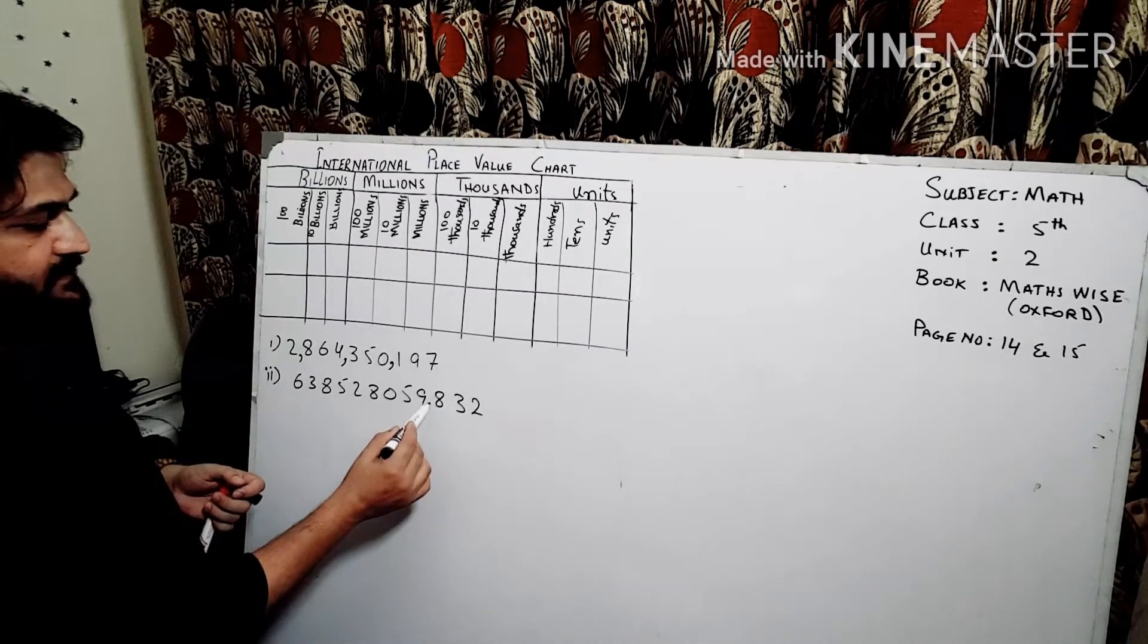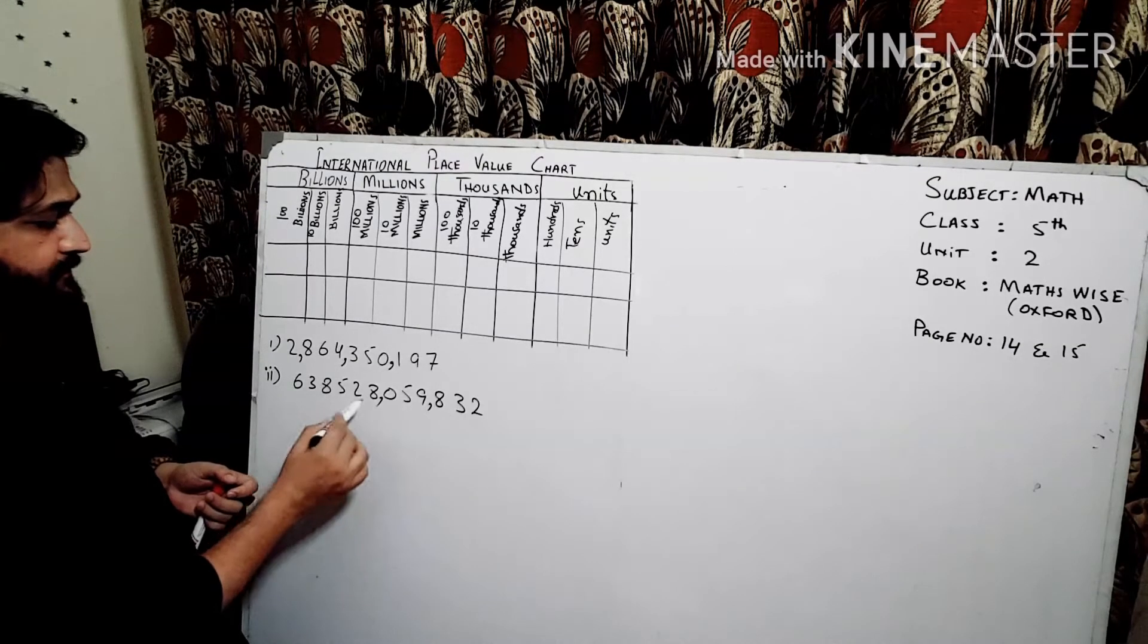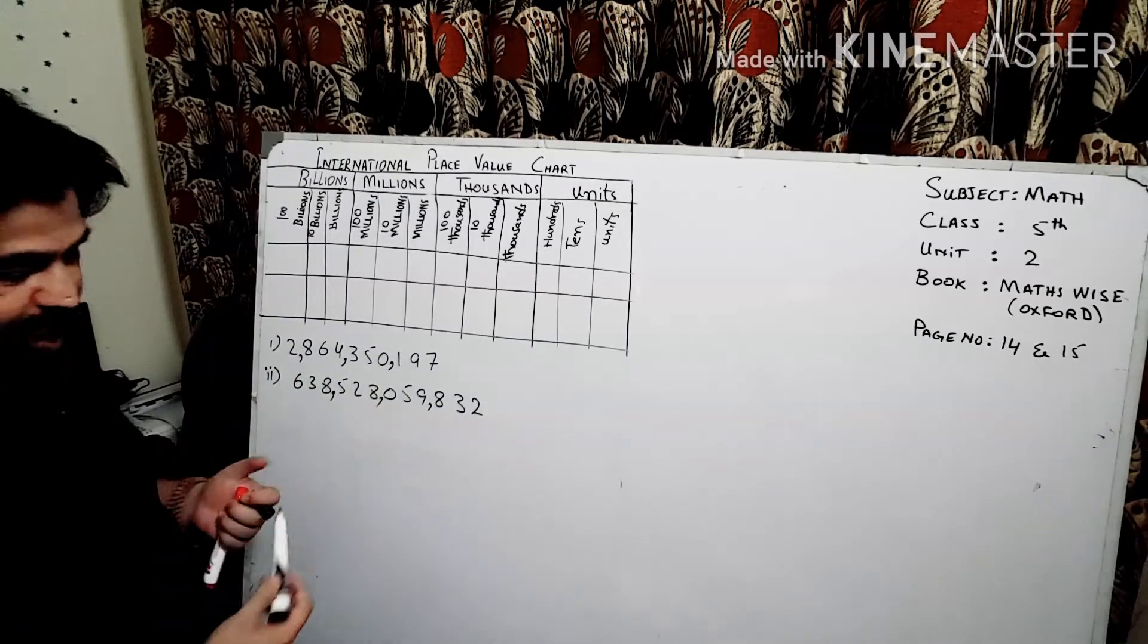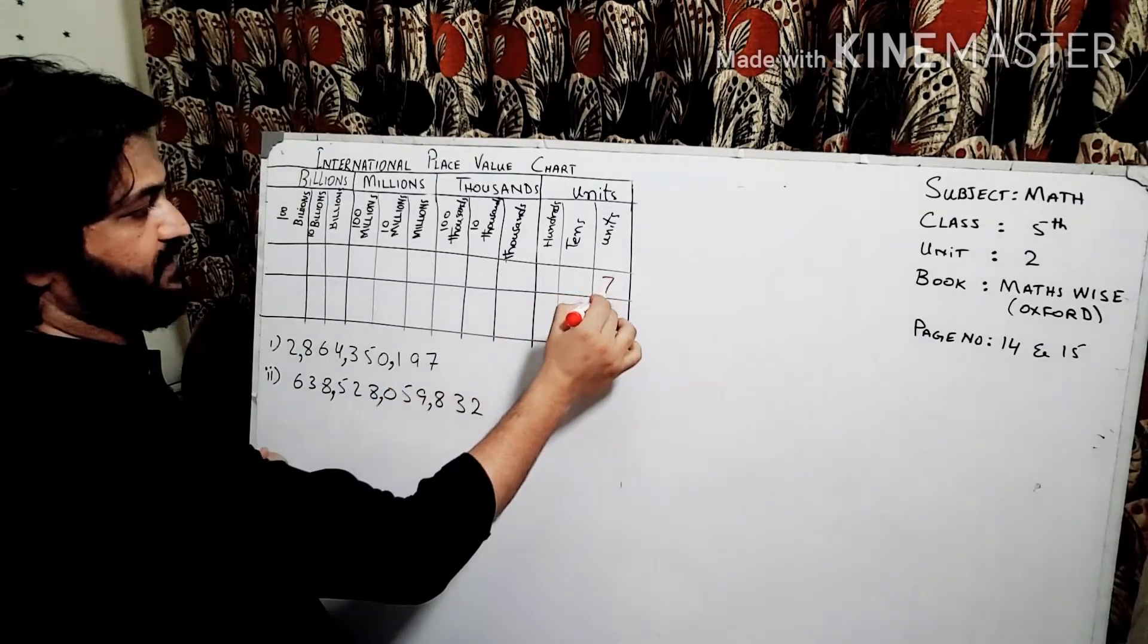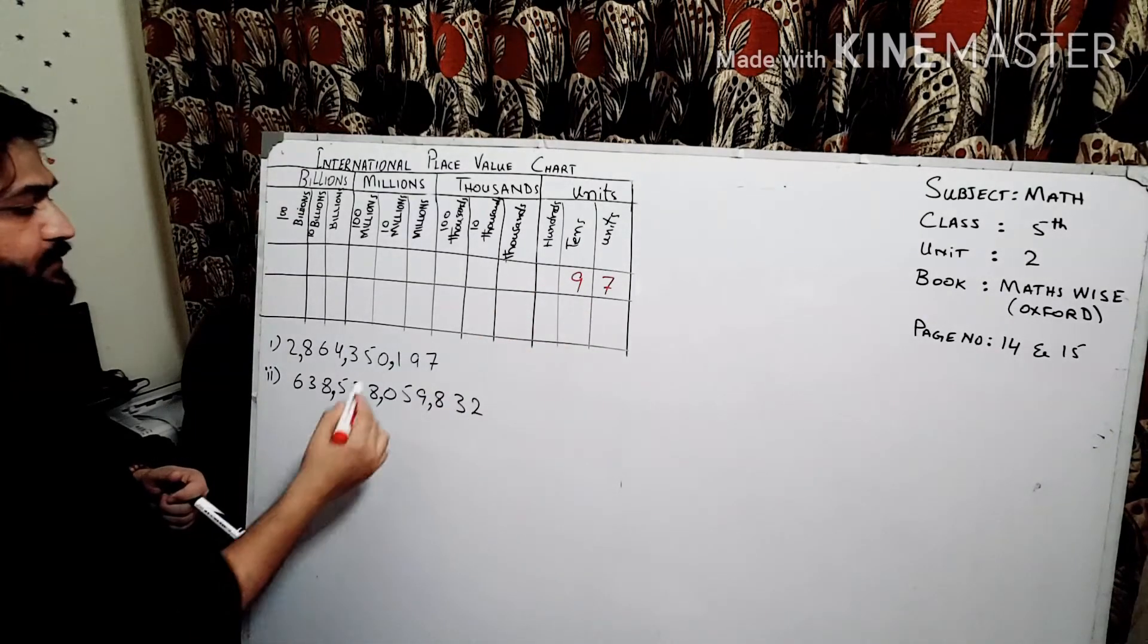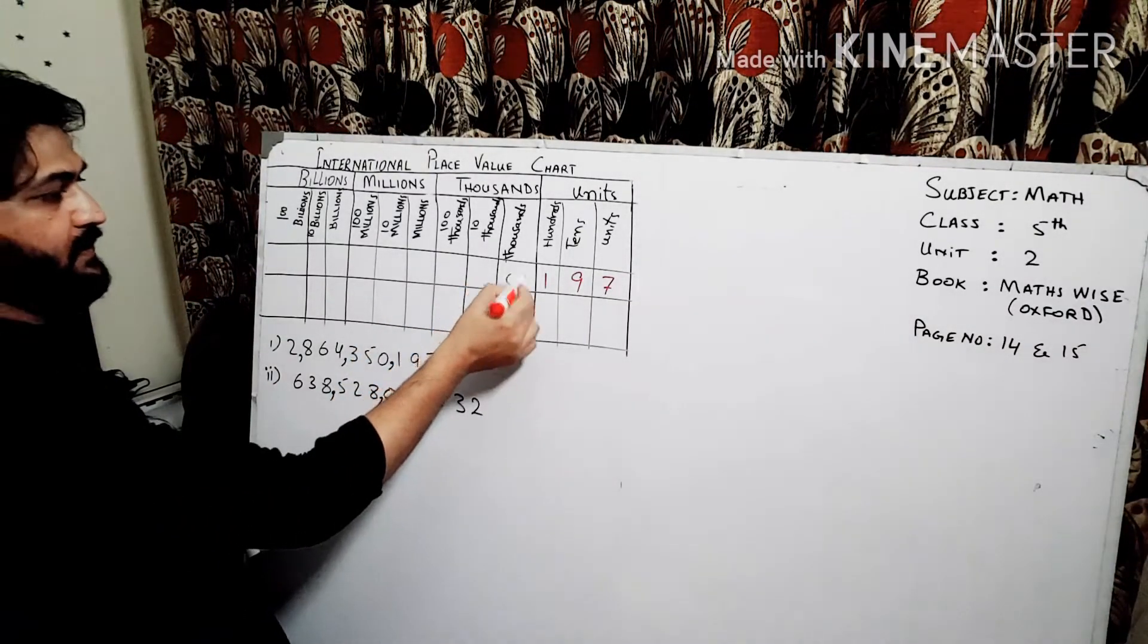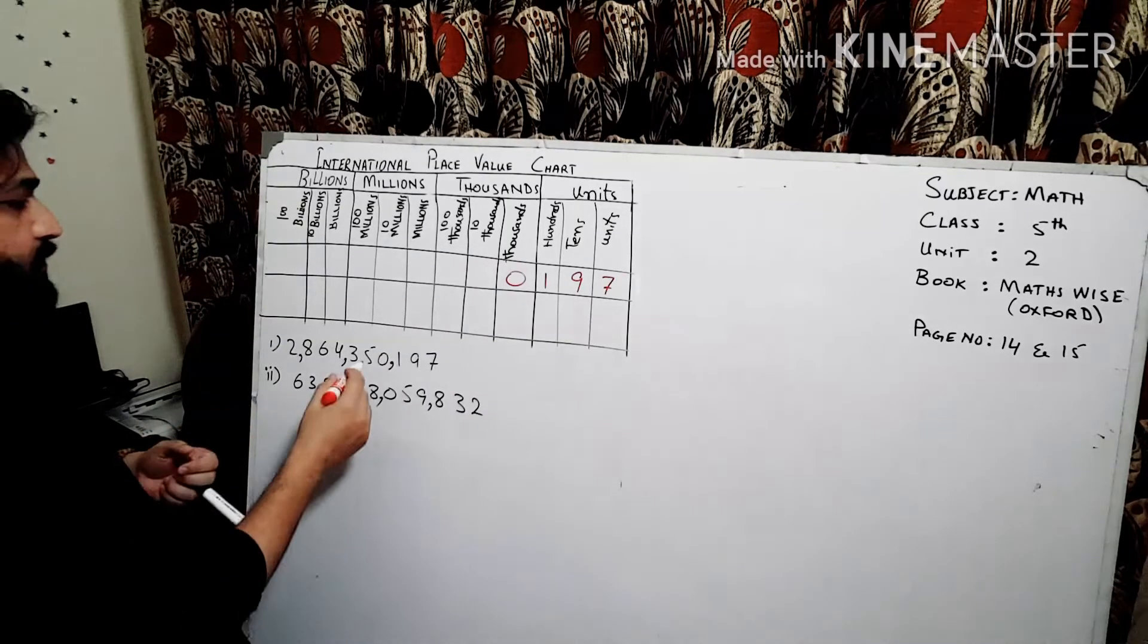For that purpose we have to put commas to characterize them. So in this case, after three digits put comma so you can read them and understand them. If I put these digits like first number goes to the units, second to the ten place value, and one goes to the hundreds, so this is 197.